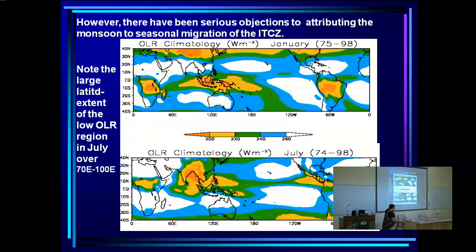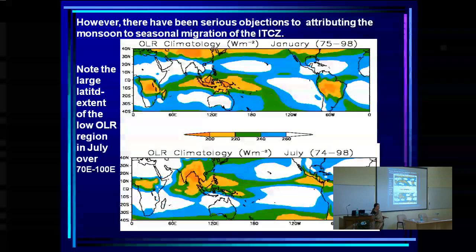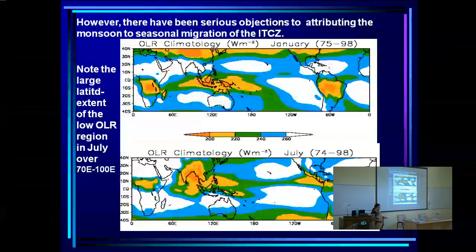This was a very serious question. If we believe in the second hypothesis, we must not only prove that it is indeed the migration of the ITCZ, but also answer why this region is so large in extent.